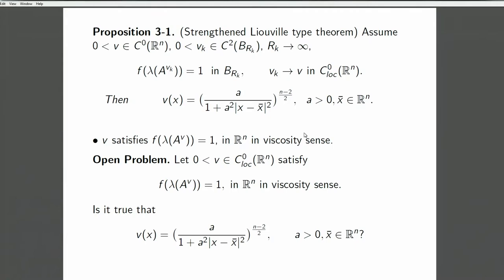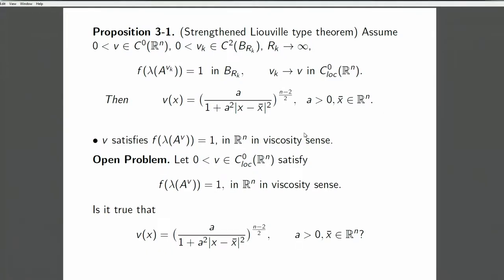The first statement — this proposition — ensures that the blow-up profile is the same V. It is not known whether or not, if a solution has weaker regularity on this entire space: if it's C2, classification is known; if it's C1-alpha, it is not known.